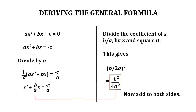You may wonder where this general formula comes from. It comes from the process known as completing the square. Here's how. We start from ax squared plus bx plus c equals 0, and now we move the c to the other side, so we have ax squared plus bx equals minus c. Now we divide through by a, so we have x squared plus b over a times x equals minus c over a.